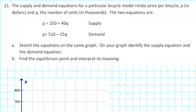Part A: sketch the equations on the same graph. On your graph, identify the supply equation and the demand equation. Part B: find the equilibrium point and interpret its meaning.